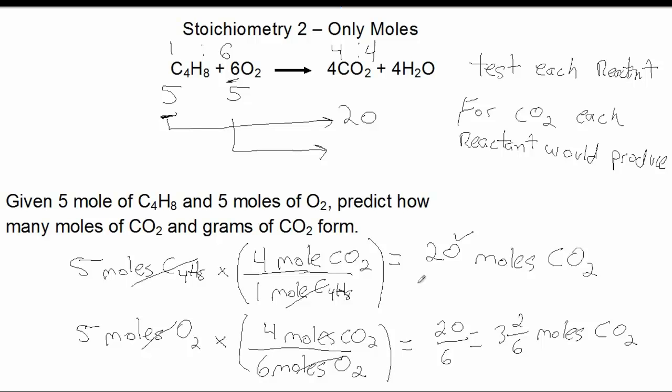Now you pick the smaller number—20 over 6. This is the only number that makes sense because, given these two quantities, the O2 is the one that's going to limit the amount of product produced. You don't have enough O2 to produce 20 moles. You have plenty of C4H8 to produce 20 moles, but if you only have five moles of O2 lying around, you can only produce 20 over 6. In this case, we have something called the limiting reactant, and that is the O2.